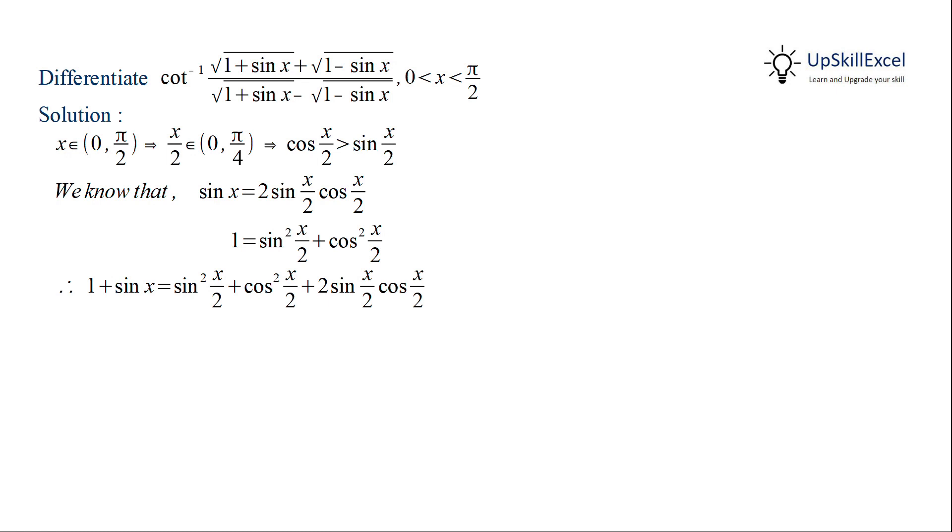So we can write 1 plus sin x is equal to sin square x by 2 plus cos square x by 2 plus 2 sin x by 2 cos x by 2, and this can be simplified to sin x by 2 plus cos x by 2 whole square. If we take the root on both sides, we'll get root of 1 plus sin x is equal to sin x by 2 plus cos x by 2.